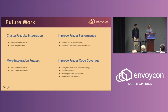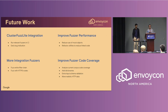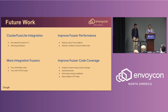In the future, we're looking into integrating Envoy CI with ClusterFuzz Lite, which executes fuzzers when a PR is submitted to find bugs earlier in the development process. We're also looking at improving the performance of different fuzzers to cover more inputs and increase their signal-to-noise ratio. We'd like to add more integration fuzzers and improve their performance, and we're looking at how to improve fuzzers' code coverage to ensure we cover code blocks of high importance. Thank you!